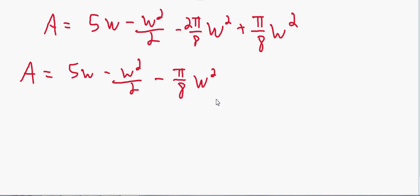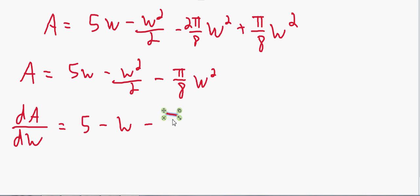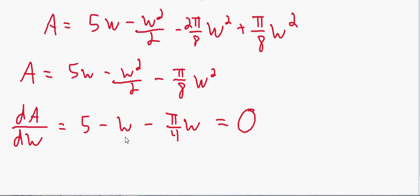Now we maximize this function by differentiating. Taking the derivative with respect to w — not time, so no dw/dt — we get: A'(w) = 5 - w - (π/4)w. We set this equal to zero to find critical numbers.